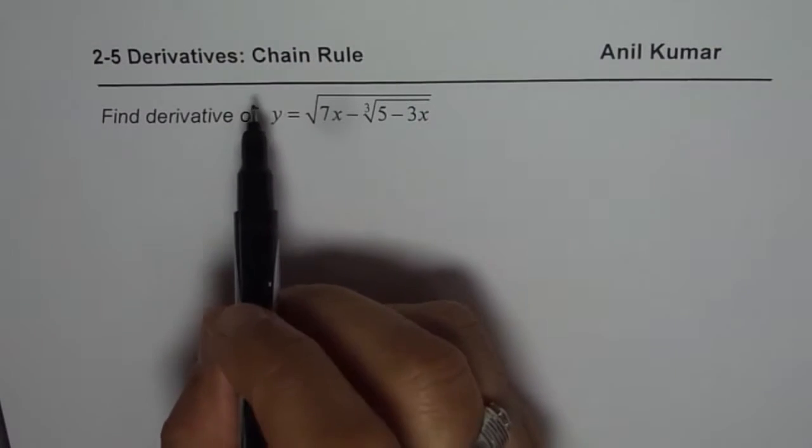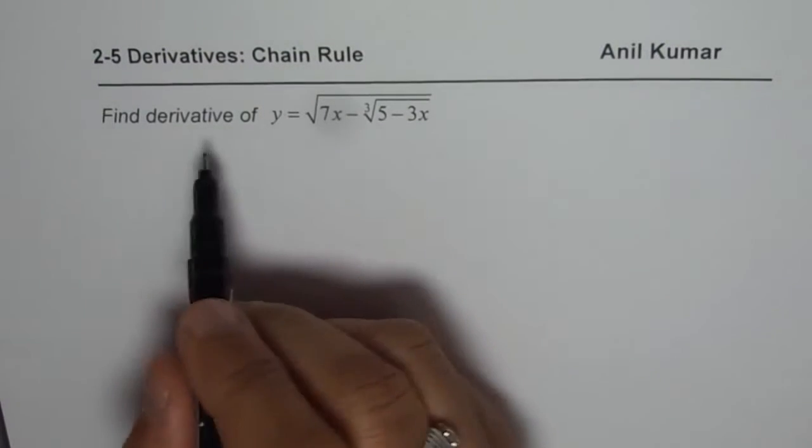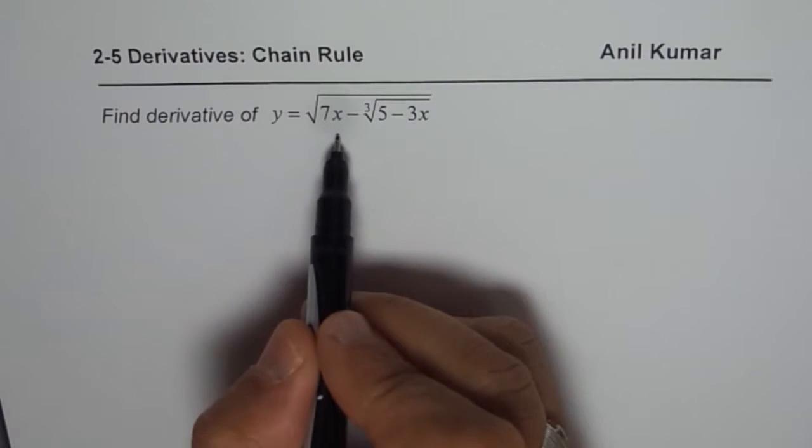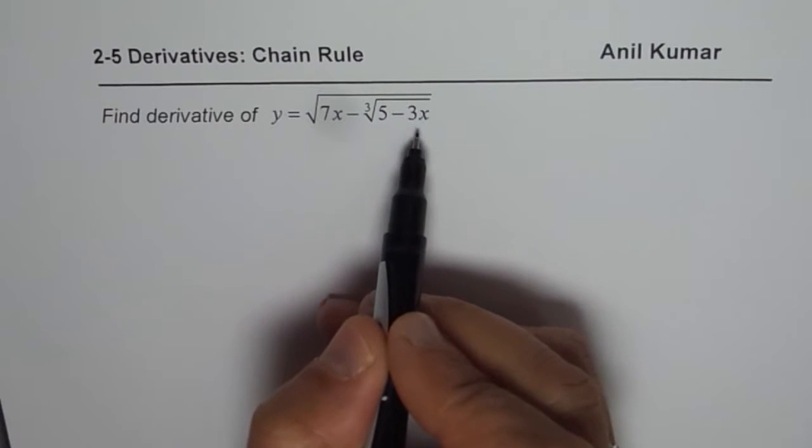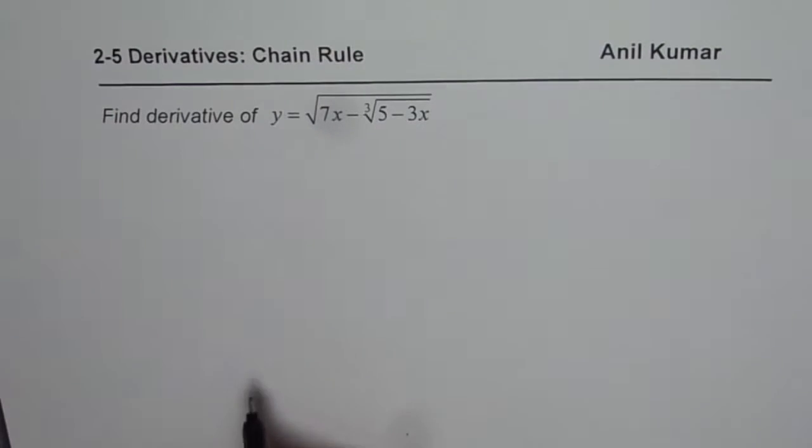So we are doing derivatives using chain rule. The function given to us is y equals to square root of 7x minus cube root of 5 minus 3x. You need to find its derivative.